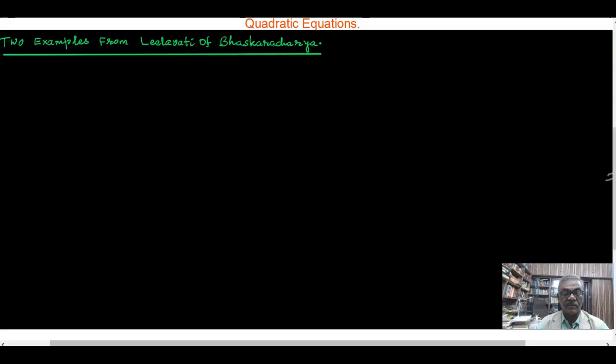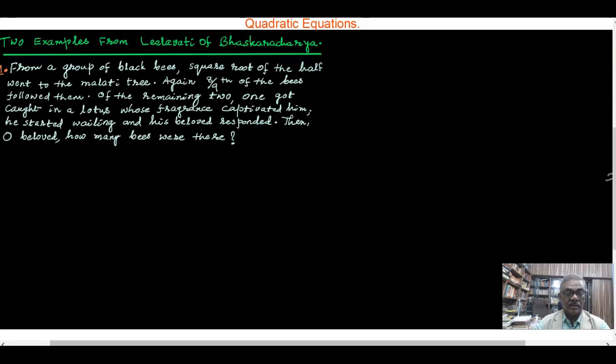Two examples from Leelavati of Bhaskaracharya. The first one is: from a group of black bees, the square root of the half went to the malati tree. Again 8/9 of the bees followed them. Of the remaining two, one got caught in a lotus whose fragrance captivated him.